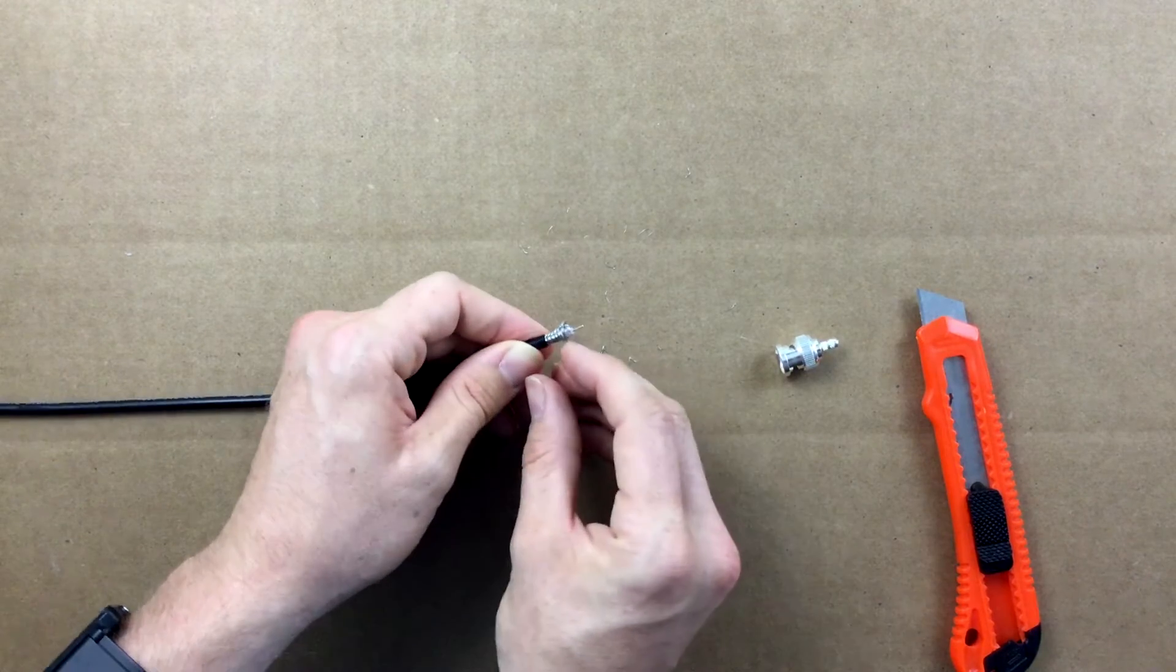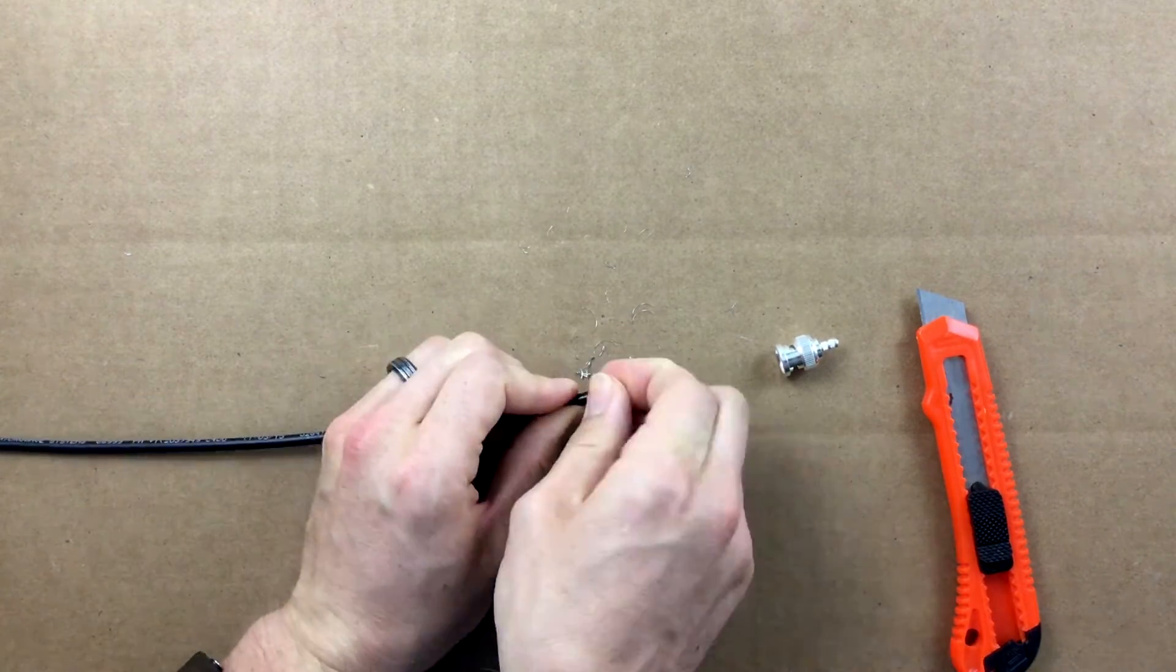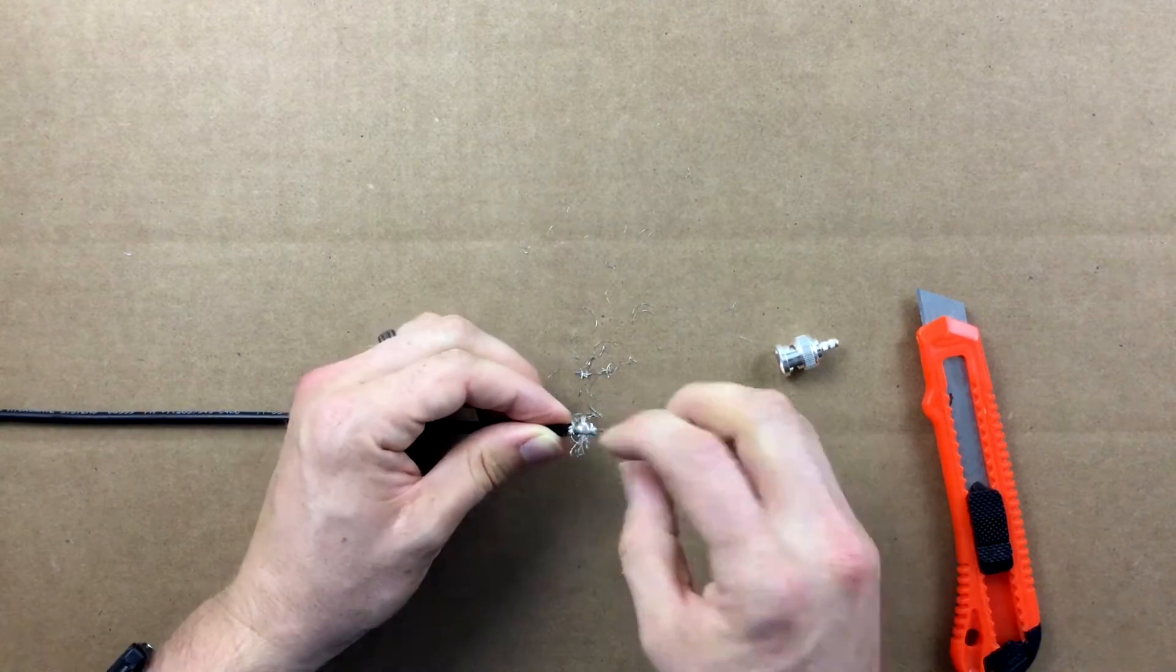Begin spreading apart the braided shield of the coax. Be sure when doing this that equal amounts of braid are spaced out around the coax.